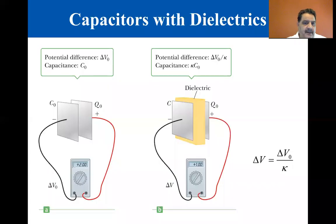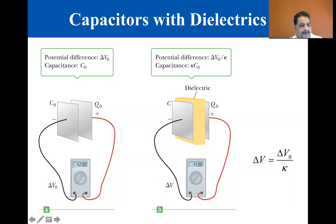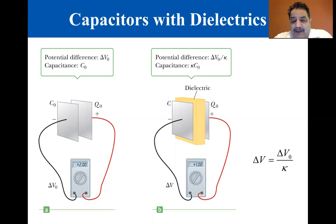We're now at section 16.8, that is capacitors with dielectrics. A dielectric is an insulating material, for example, rubber, plastic, or wax paper.